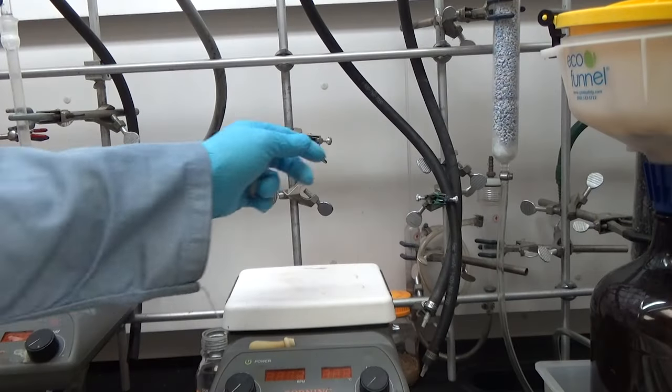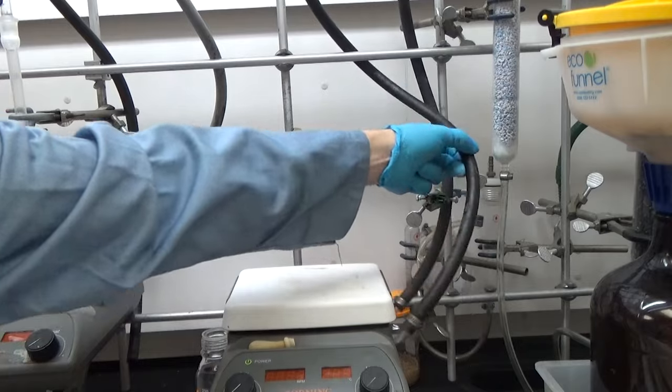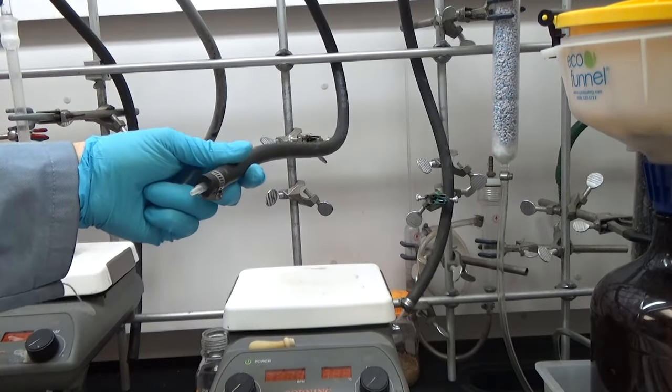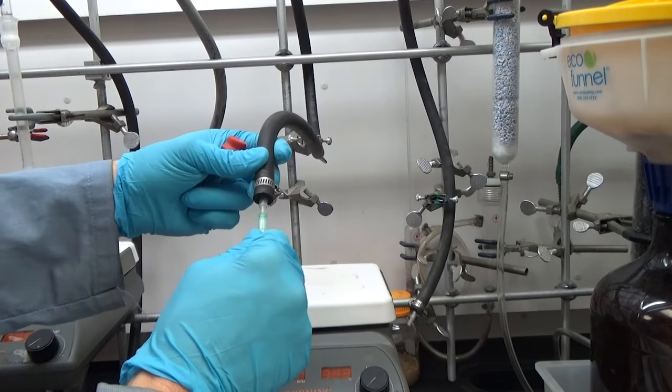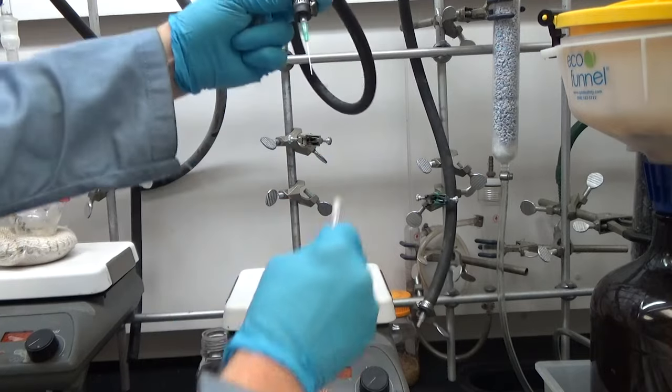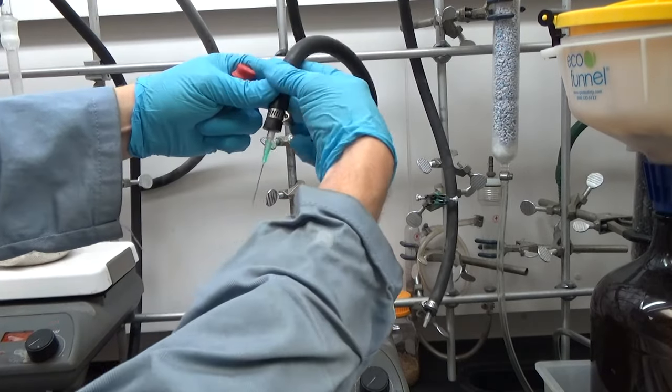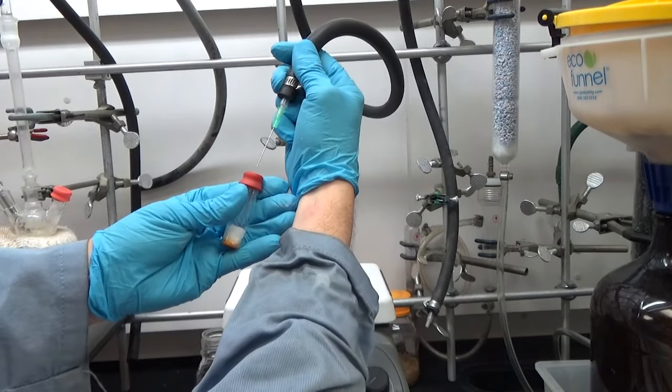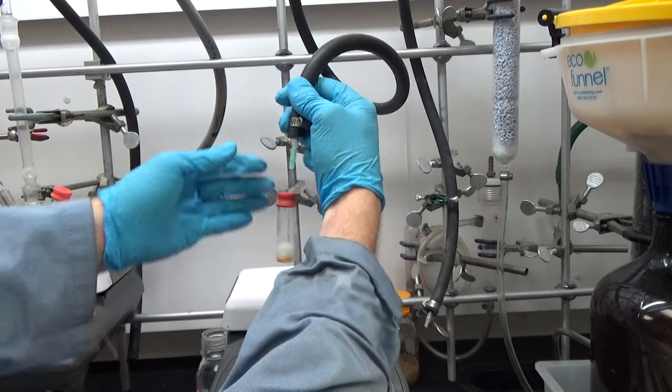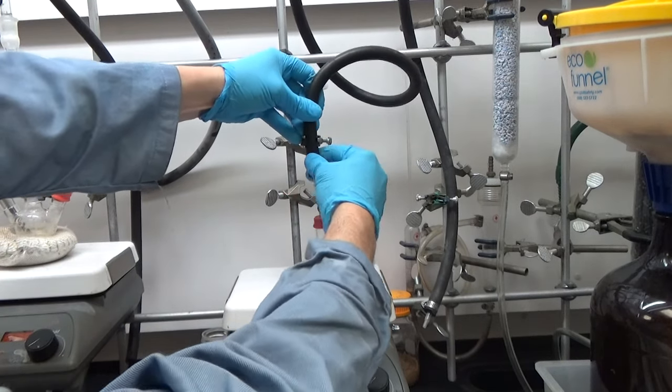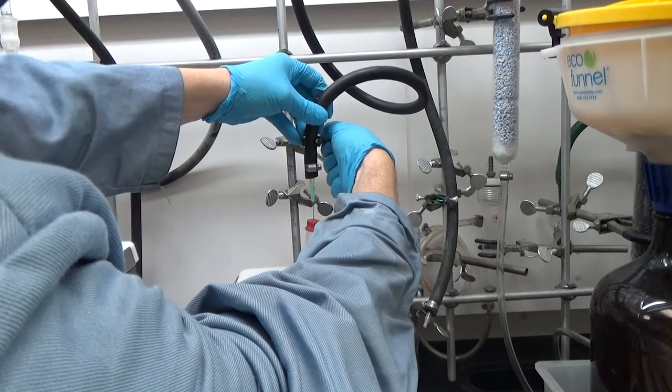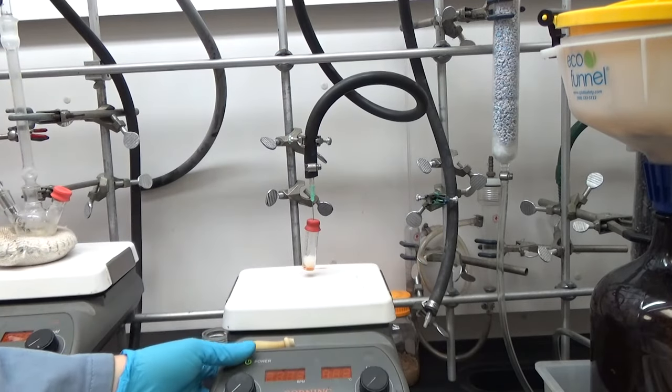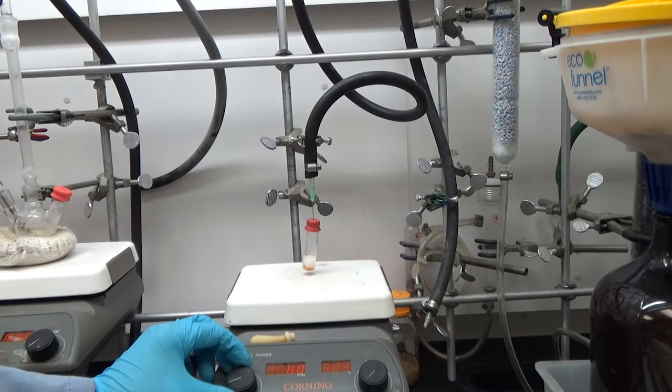Now what we're going to do is attach that to our Schlenk line. And what I've done is I've attached a syringe to the hose. That clamp is quite necessary. And I'm using a thin 21 gauge needle. Be careful when you take the cap off. And that just goes through the septa. It's pretty self-explanatory. Again, make sure the stir bar is in there. And as usual, I like to clamp things pretty tightly.